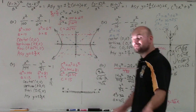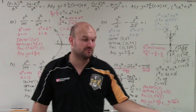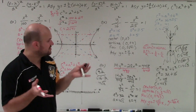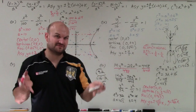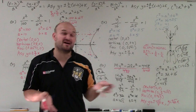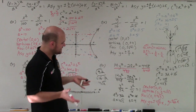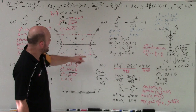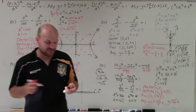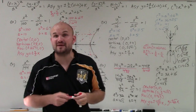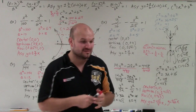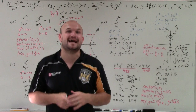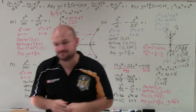Remember, square root of 2 is just an irrational number, so that is your slope — which wouldn't be easy to graph. When you have something hard to graph and you need to find the asymptotes, the easiest approach is to create that box by connecting the vertices and co-vertices. There you go, ladies and gentlemen — that is the basics for determining the vertices, foci, and asymptotes of a hyperbola. Thanks.